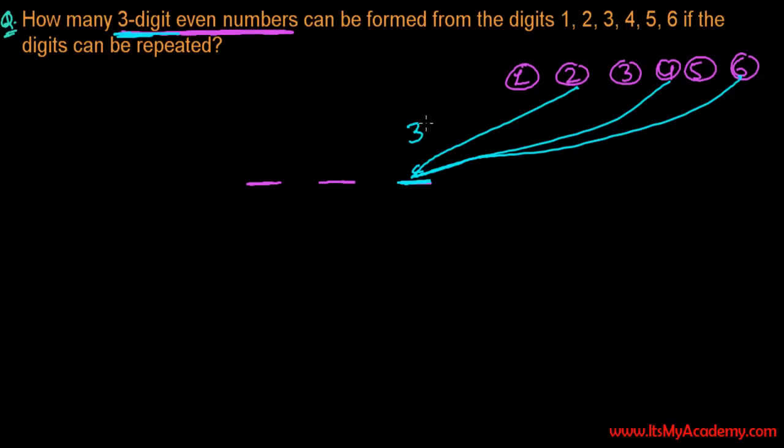The first two positions can be filled with any of the six digits because to make an even number, only the last digit matters - the middle and first positions can be odd or even, it doesn't matter. For example: 124, 126, 456, or whatever - as long as the last digit is 2, 4, or 6, you get an even number.